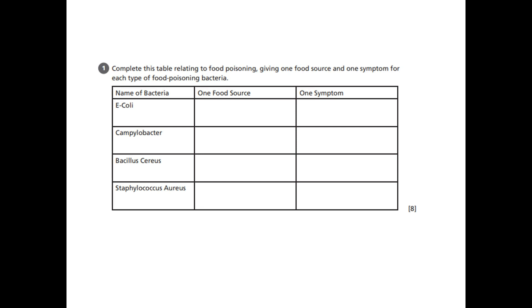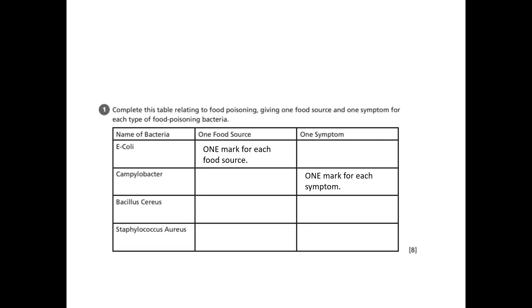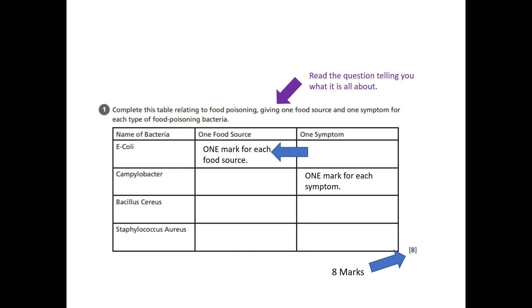This question refers to the food poisoning bacteria, food sources and symptoms. First of all, read the question carefully so you know what it is all about. This question is worth eight marks — one mark for each food source and one mark for each symptom.